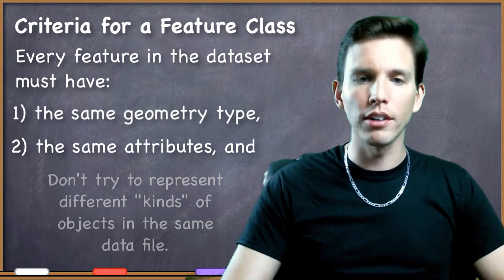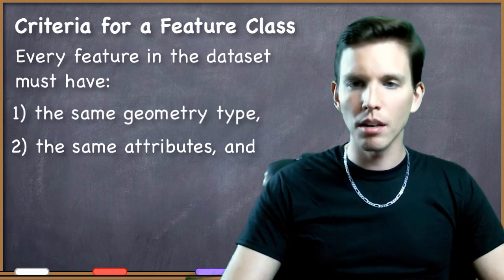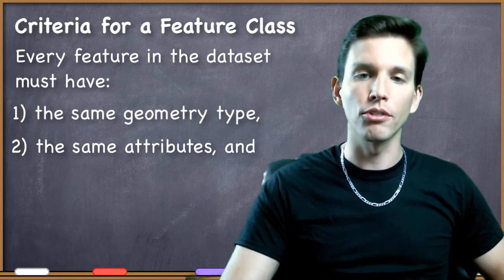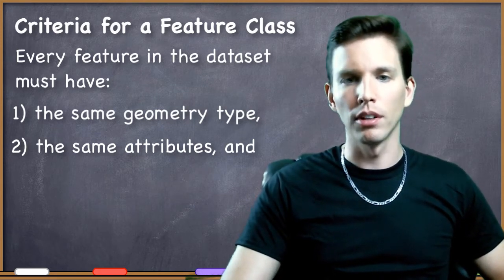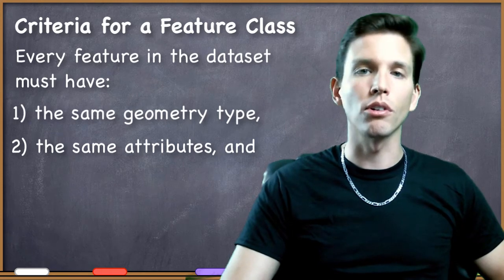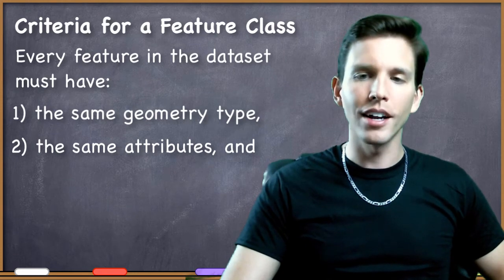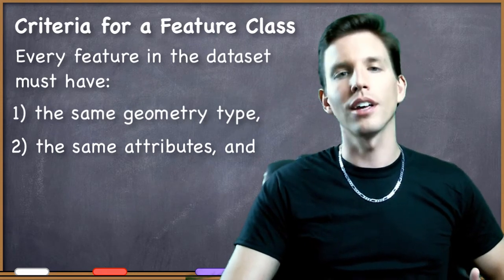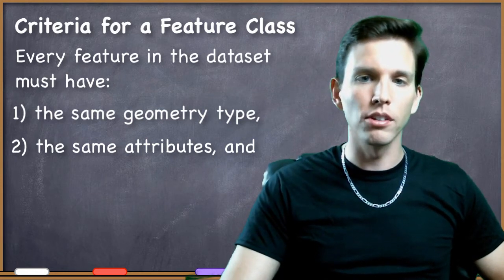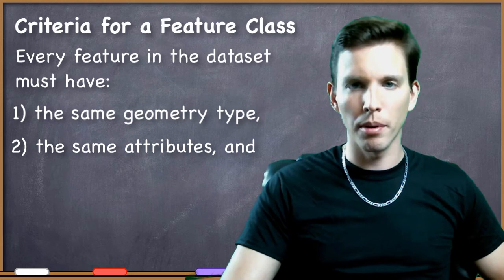In many cases, these two criteria come naturally to people who have already been working with GIS. They think about different sets of data as different files with the same geometry inside each file and the same attributes inside each file — it becomes second nature. Sometimes when I ask students in second or third semester GIS classes about the criteria of feature classes, they don't even immediately think of these because they seem so obvious. But it's very important to make explicit note of these things, even if you consider them obvious, so that we specify them and know what our best practices are.